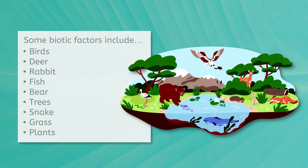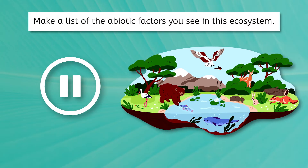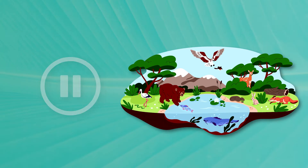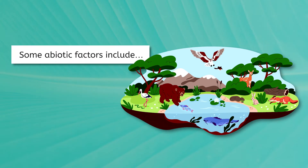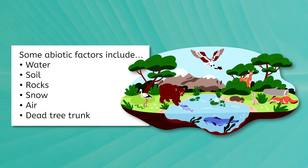Now let's make a list of the abiotic factors in this ecosystem. Pause the video and make your list. Welcome back! Let's see how you did. On your list of abiotic factors, you may have water, soil, rocks, snow, air. What about the dead tree trunk? Did you include that? While the tree was once a biotic factor when it was alive, once it is dead, it is considered an abiotic factor.